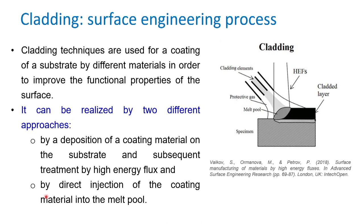The second cladding approach is direct injection, where we inject the coating material into the melt pool. Using high energy fluxes we create the melt pool, then the material to be cladded is injected over the surface, it re-solidifies, and there is fusion of the deposited material with the substrate at the interface only. The cladding material does not lose its properties significantly, as there is no complete mixture or dilution of the cladded material with the substrate. Thus, the cladding surface retains the material properties of the deposited material.